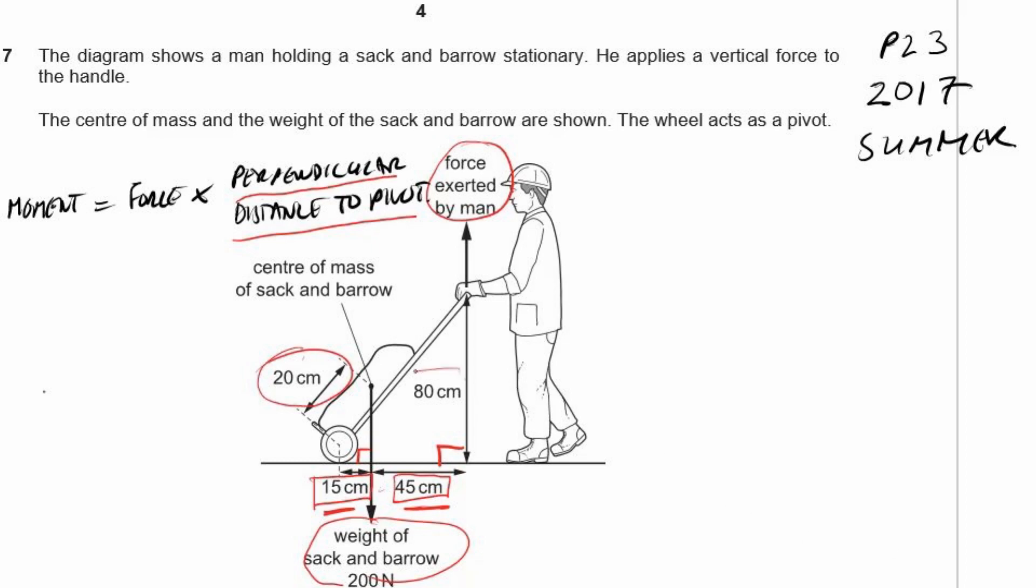This 20 centimetres here is just thrown in to confuse you. And this 80 centimetres, again, doesn't mean anything in this context. We don't need to worry about the angles. We don't have to reduce things to sine and cosine. We're not looking for the total force exerted by the man. We're looking for the vertical force. And this line here is the vertical force line. That's why it goes straight up and it's extended straight down.